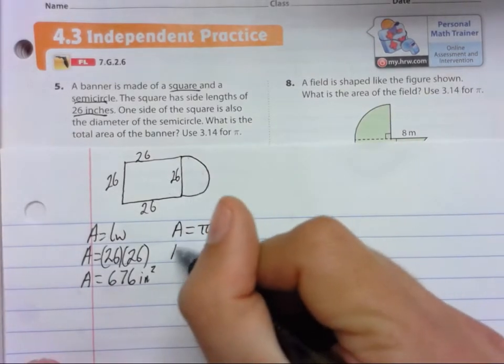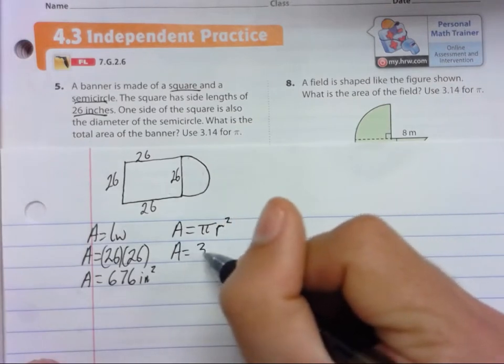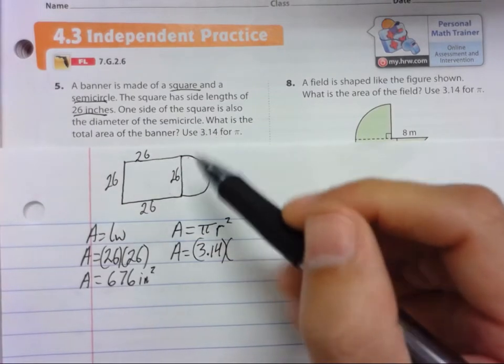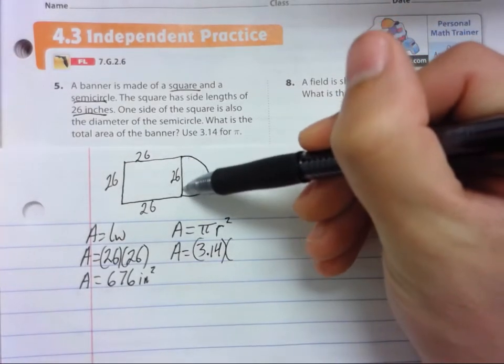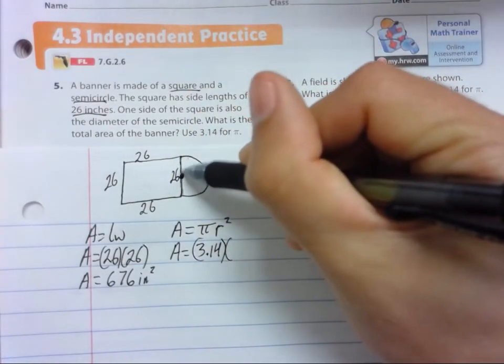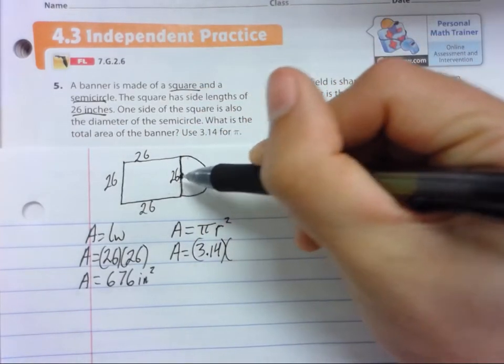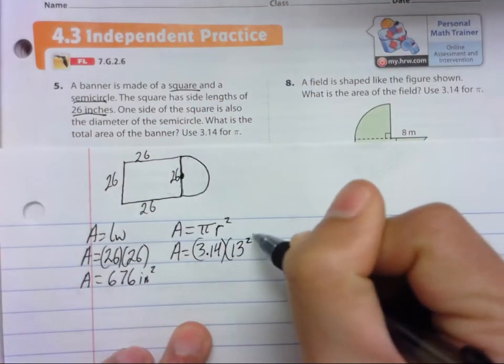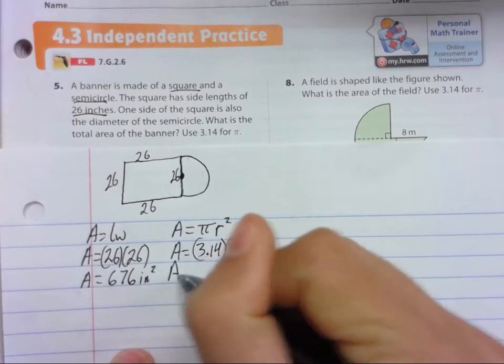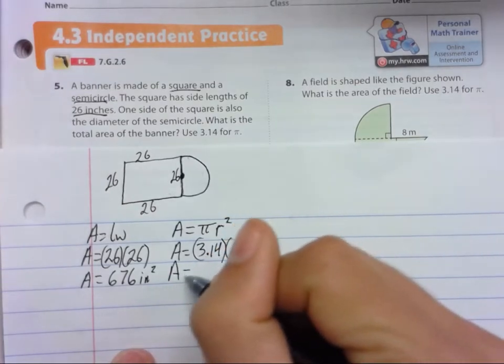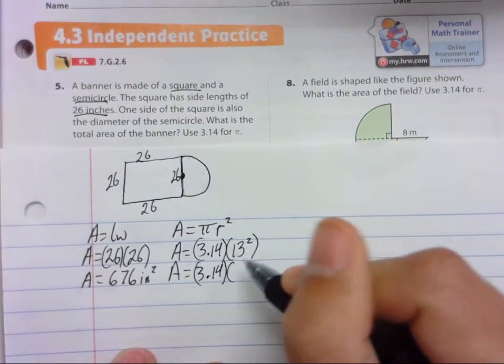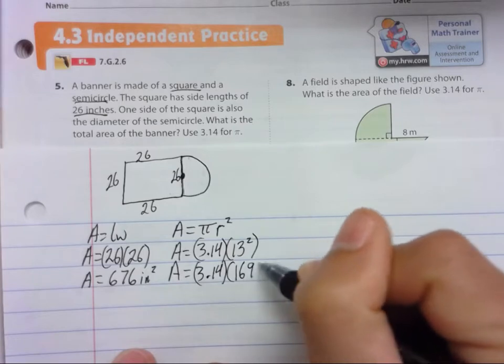So now we're going to substitute. Area equals 3.14. The radius is what we need to find. So all the way across is 26. That's the diameter. We don't want that. We want halfway across. We need to take half of 26 for the radius. So the radius is 13 and we need to square that. So area equals 3.14 times 13 squared. 13 times 13 is 169.